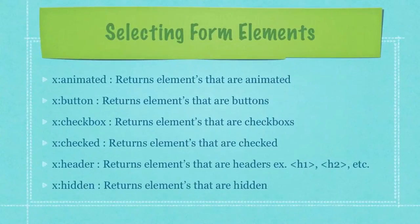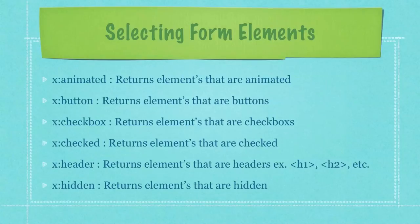Here is how you would select form elements. The first bulleted item will return elements that are animated. The second returns elements that are buttons. The third returns elements that are checkboxes. The fourth returns elements that are checked. The fifth returns elements that are headers — for example, h1 through h6 tags. And finally, this last piece of code will return elements that are hidden.